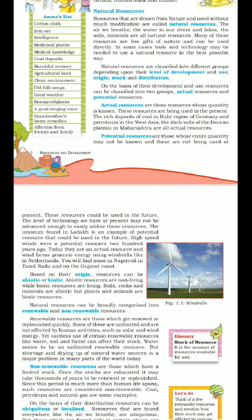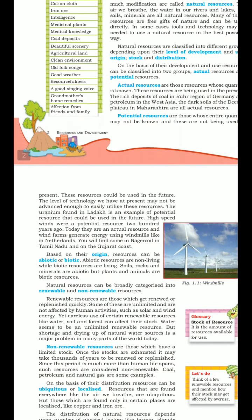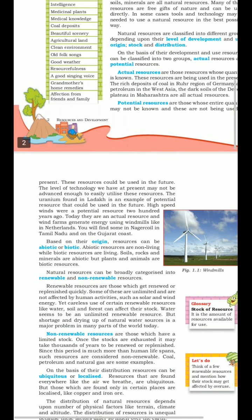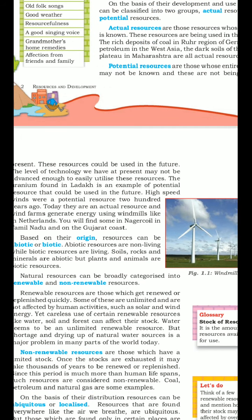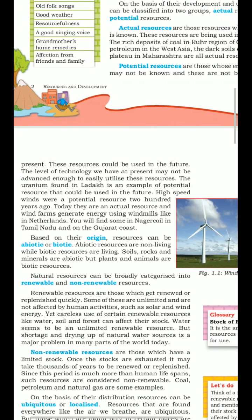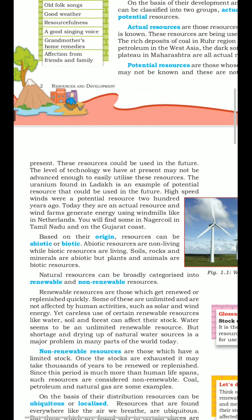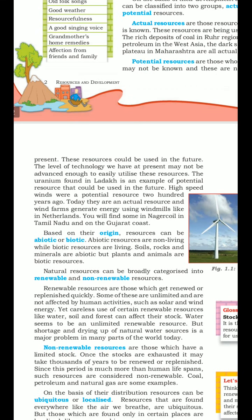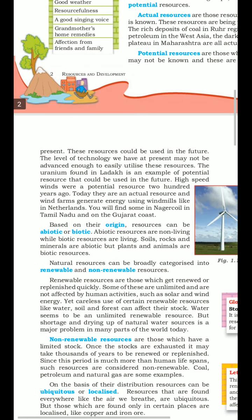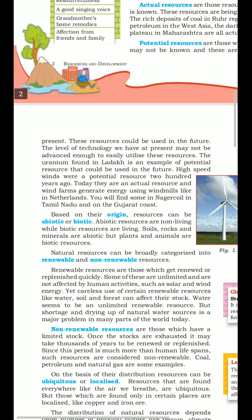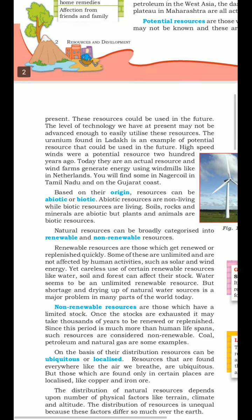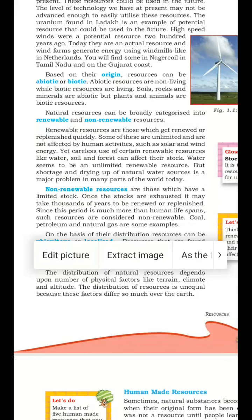Next, based on origin, resources can be abiotic or biotic. Abiotic resources are non-living things — for example, soil, rocks and minerals. Whereas biotic resources are living things — for example, plants and animals.